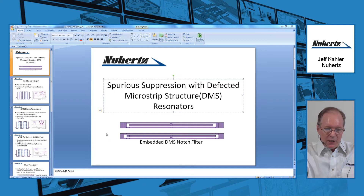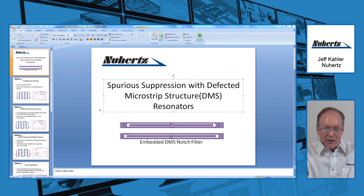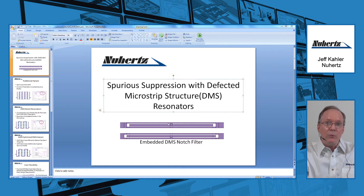You will see here on the PowerPoint slide some layout views of what a DMS resonator looks like. If you can imagine that this is a coupled resonator in between two hairpin legs, everything is normal except we see some gaps that are cut out. These gaps have the effect of producing a notch filter effect in the hairpin, and if these gaps are tuned to the spurious frequencies of the hairpin that we want to eliminate, they are very useful in notching out the spurious modes.